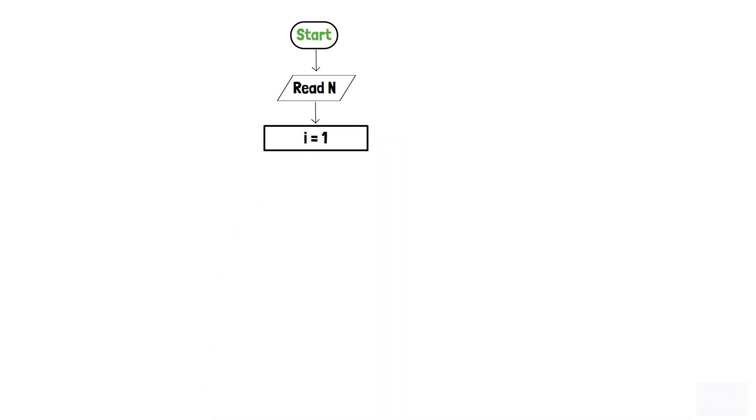As declaration and initialization is done in the process box. In addition, we will use a decision box to determine whether i is less than or equals to n or not.